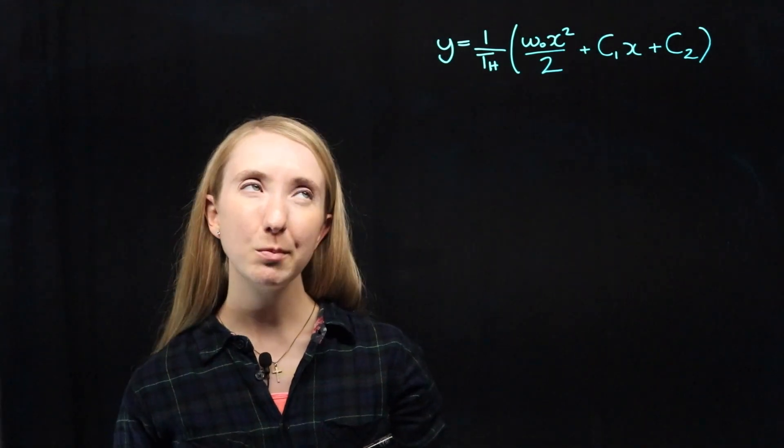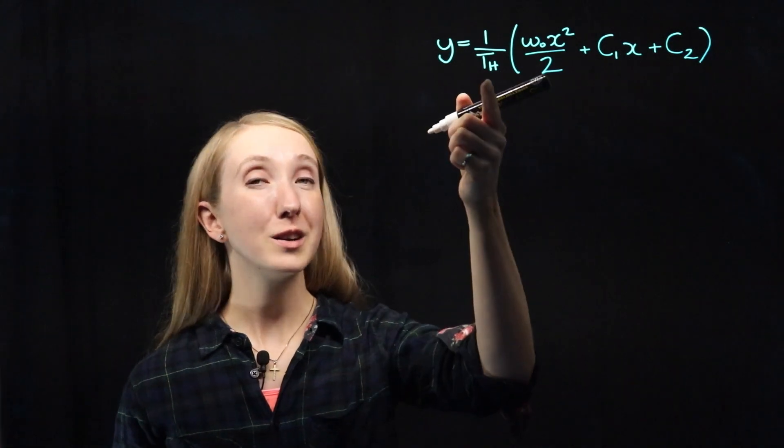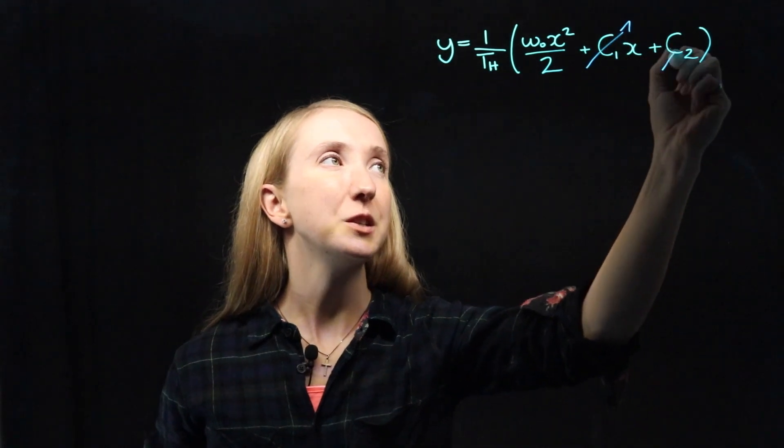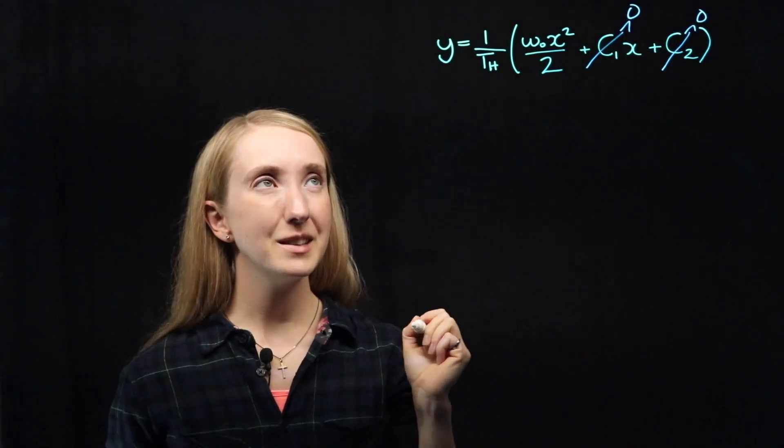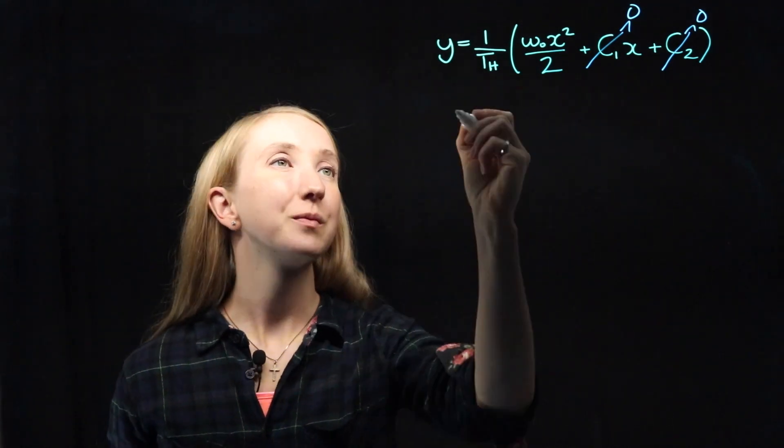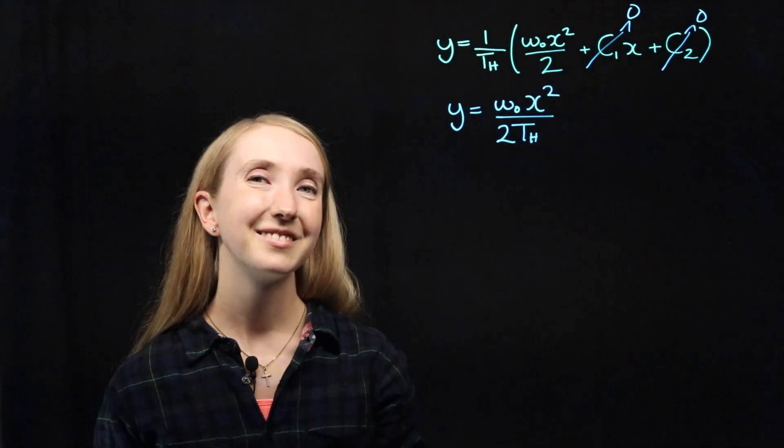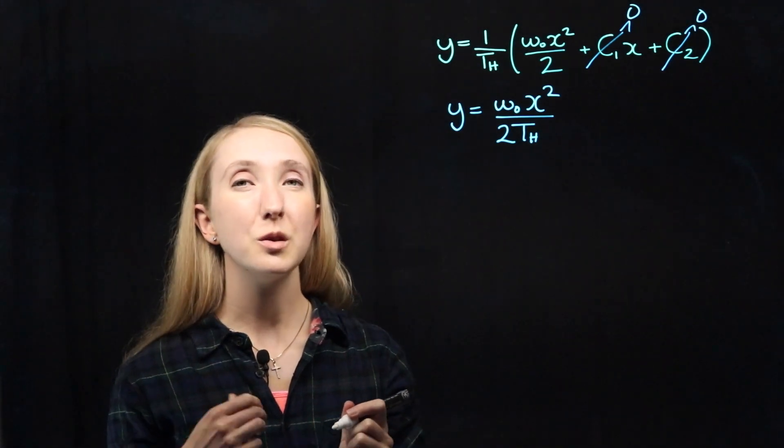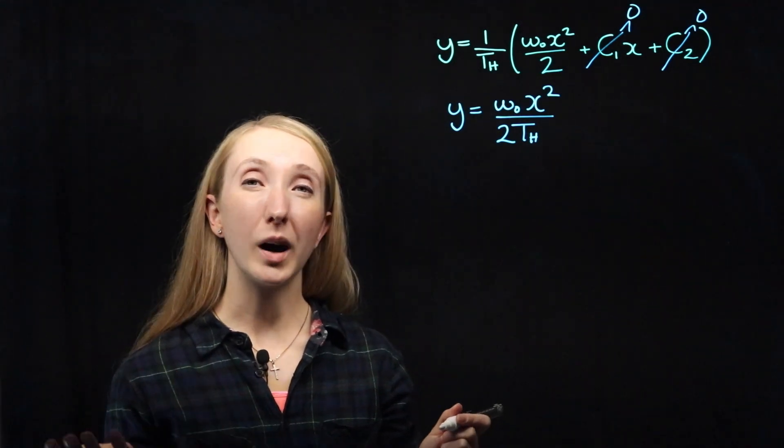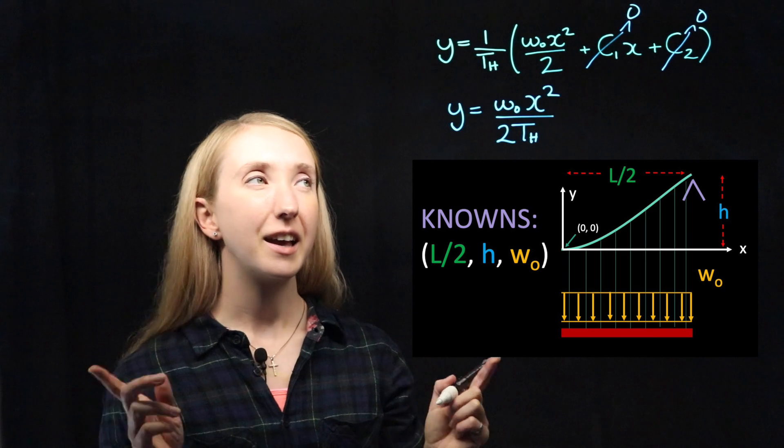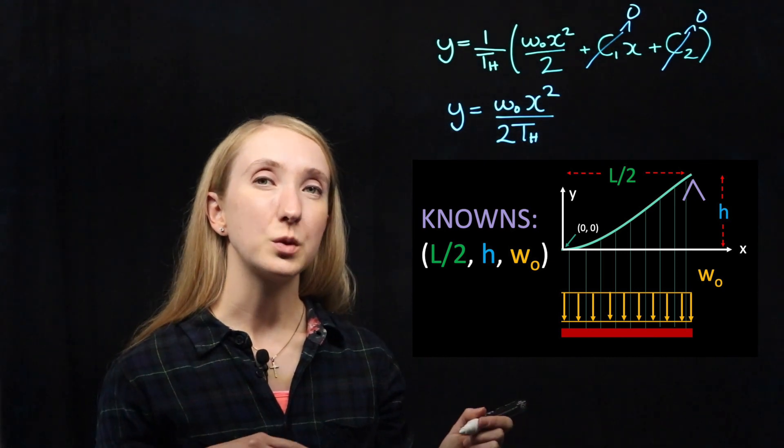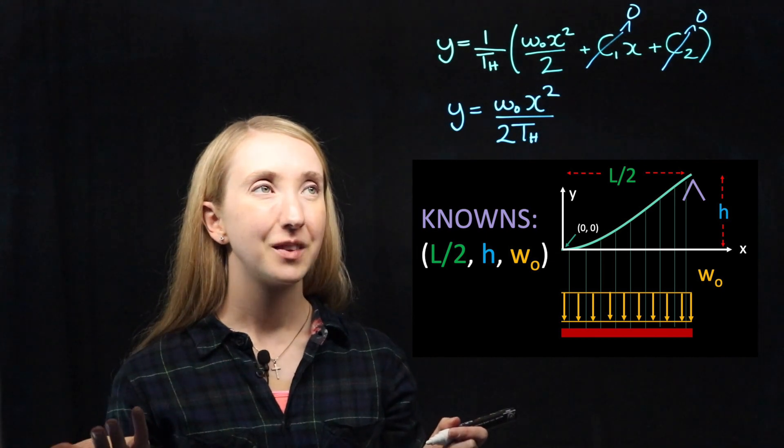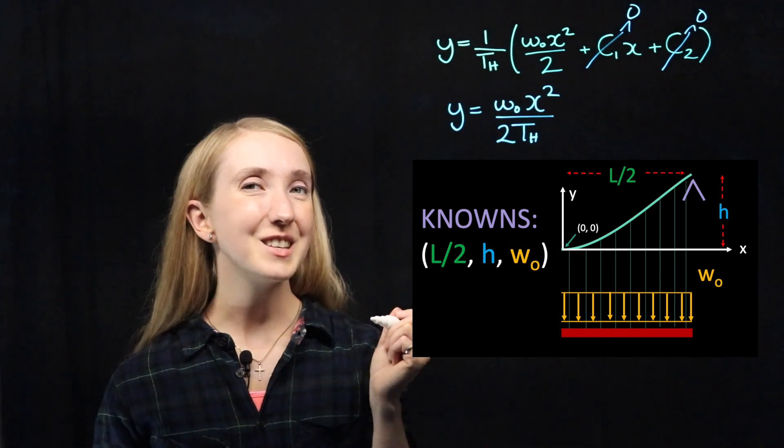Now let's use our shape equation to find an expression for our horizontal tension Th. We just learned that our two constants were equal to zero. That means our shape equation can simplify to... And looking at our system, is there any point where we know the values for both an x and y coordinate? Well, at the end of our system, the x value is equal to L over 2, and our y value is equal to H, our sag. So we can plug those values into this equation.